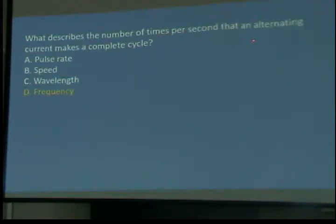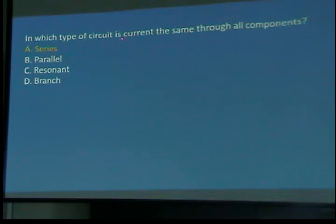What describes the number of times a second that alternating current makes a complete cycle? It is frequency. There is no difference between alternating current and RF, radiofrequency, except one: the frequency. Typically, alternating current refers to something around 60 cycles, 60 hertz. RF refers to something above, usually above 100 kilohertz, although there are radios that operate below that.